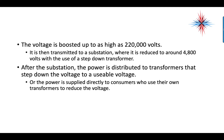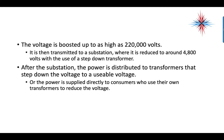The voltage is boosted up to as high as 220,000 volts. It is then transmitted to a substation where it is reduced to around 4,800 volts with the use of a step-down transformer. After the substation, the power is distributed to transformers that step the voltage down to a usable voltage. Sometimes the power is supplied directly to consumers who use their own transformers to reduce voltage — you see that more in heavy industrial applications.